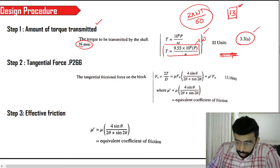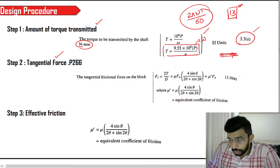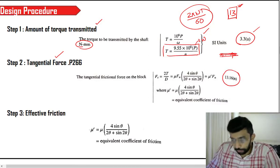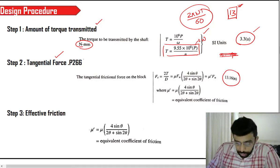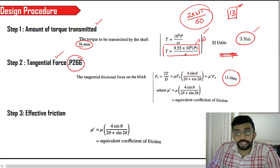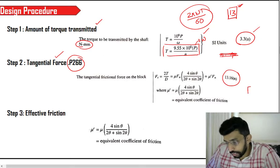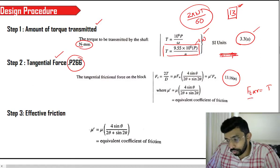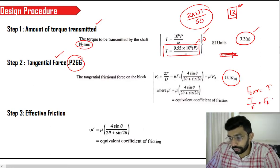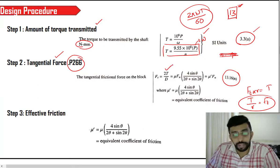In the second step, we are going to calculate the tangential force using equation 13.16M, given on page number 266. We can say that Ft × R = torque, so T divided by R gives Ft. D is the diameter of the brake drum.